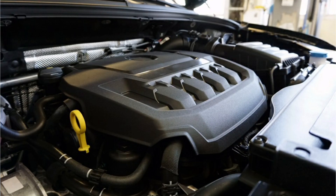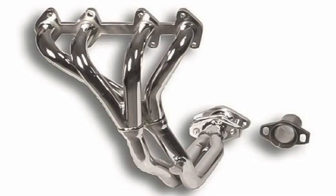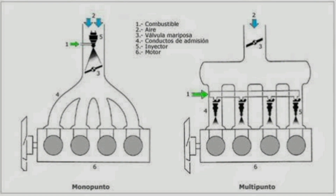Intake manifold operation. The intake manifold is located at the top of the engine, near the cylinder head. It receives the air from the air filter and directs it towards the cylinders, mixing it with the fuel for subsequent combustion. Typically, manifolds use a system of ducts distributed in multiple branches to ensure uniform distribution of the mixture to the engine. These ducts can have different lengths and diameters, depending on the engine design and performance requirements.